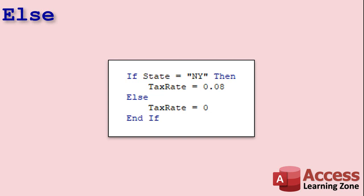Now if you want to do one thing or do another thing, we're going to use Else. For example, if state equals New York, then set the tax rate equal to 0.08. Else, or otherwise, if it's not New York, anything but New York, we're going to set the tax rate equal to 0. End If, we're done.